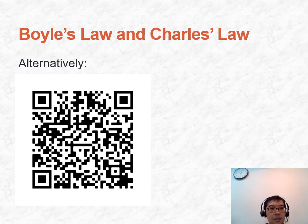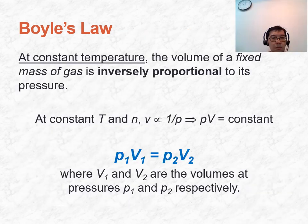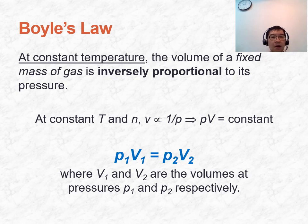We are going to examine Boyle's Law and Charles' Law. For a fixed mass of gas at constant temperature, the volume of the gas is inversely proportional to its pressure. This means that when the pressure is high, the volume occupied by the gas will be small. We can say PV equals a constant, which you can prove using the ideal gas equation. Boyle's Law can also be written as P₁V₁ = P₂V₂.